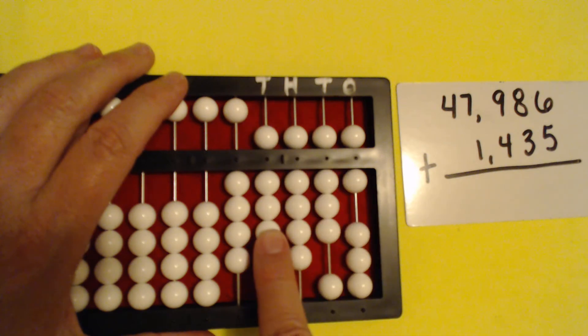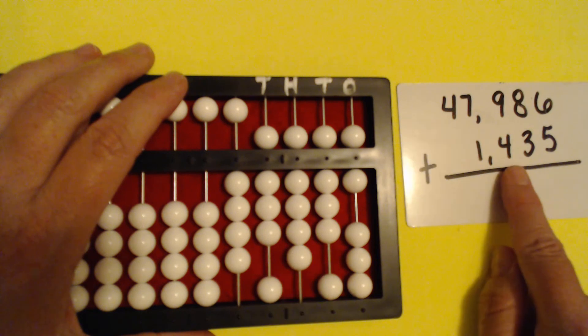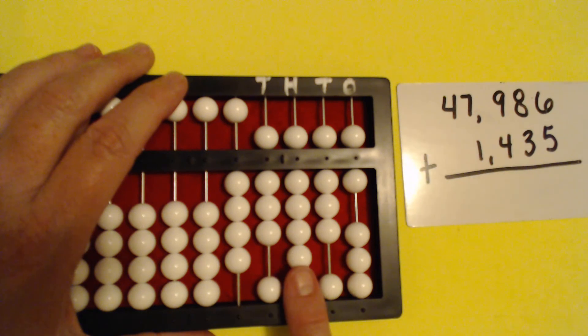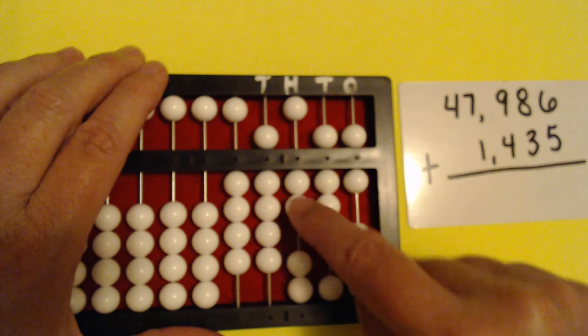There's one thousand. That's the one bead pushed up. We're going to go to the hundreds column and we're going to set 400 here. We don't have any beads here, so we're going to make an exchange. One, two, three, four.